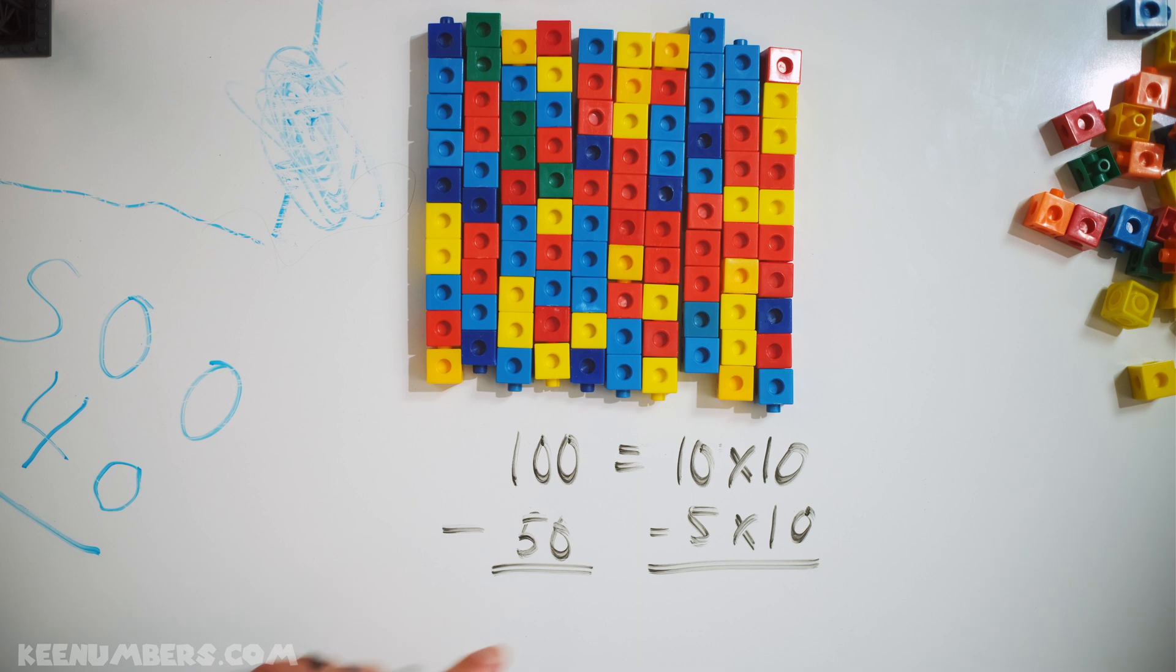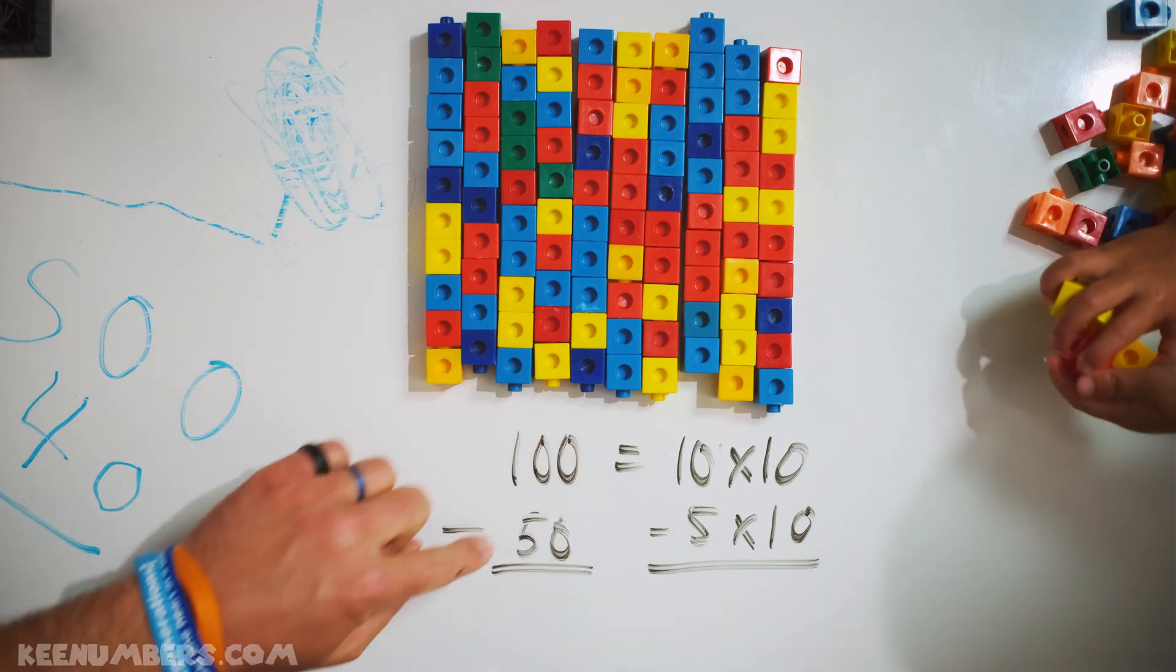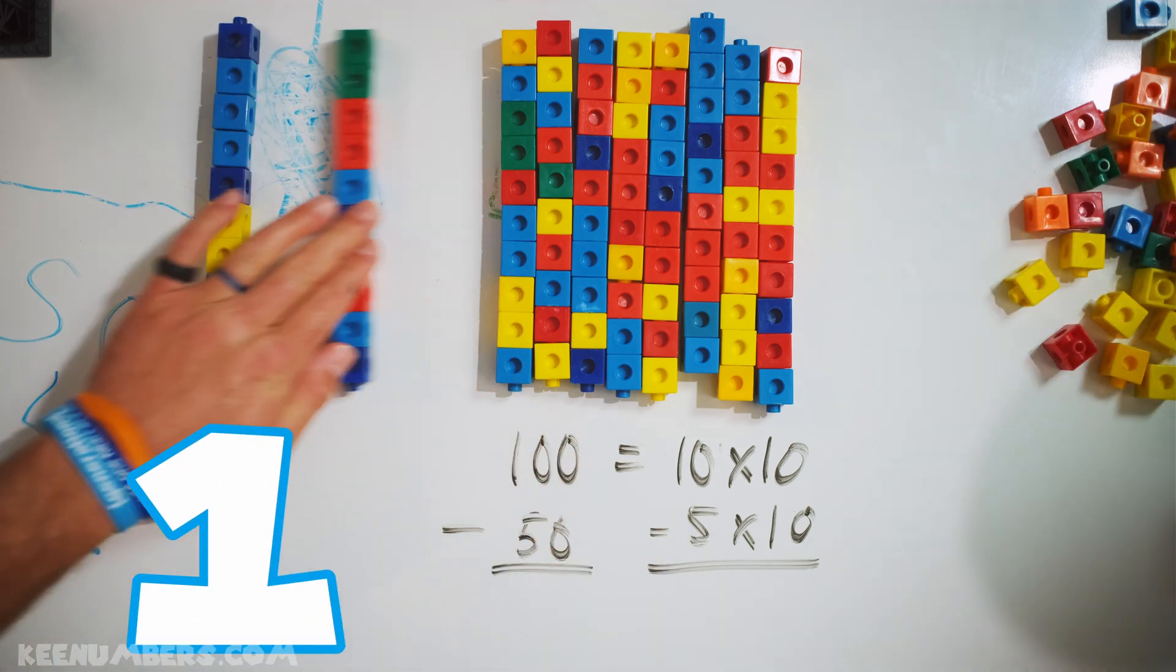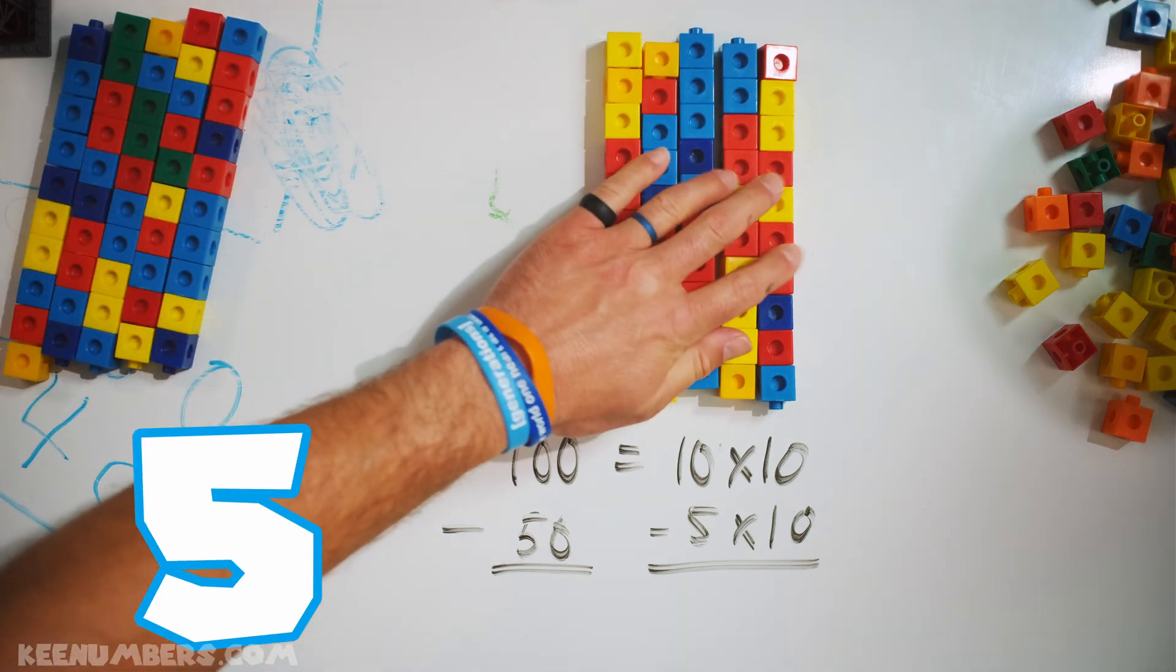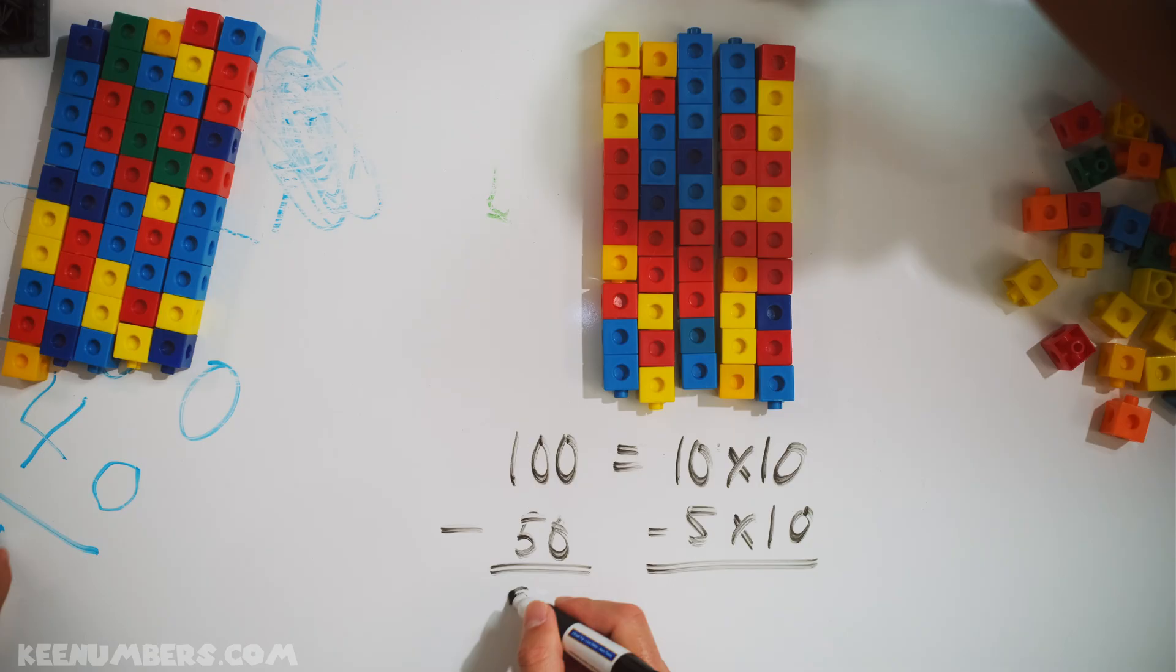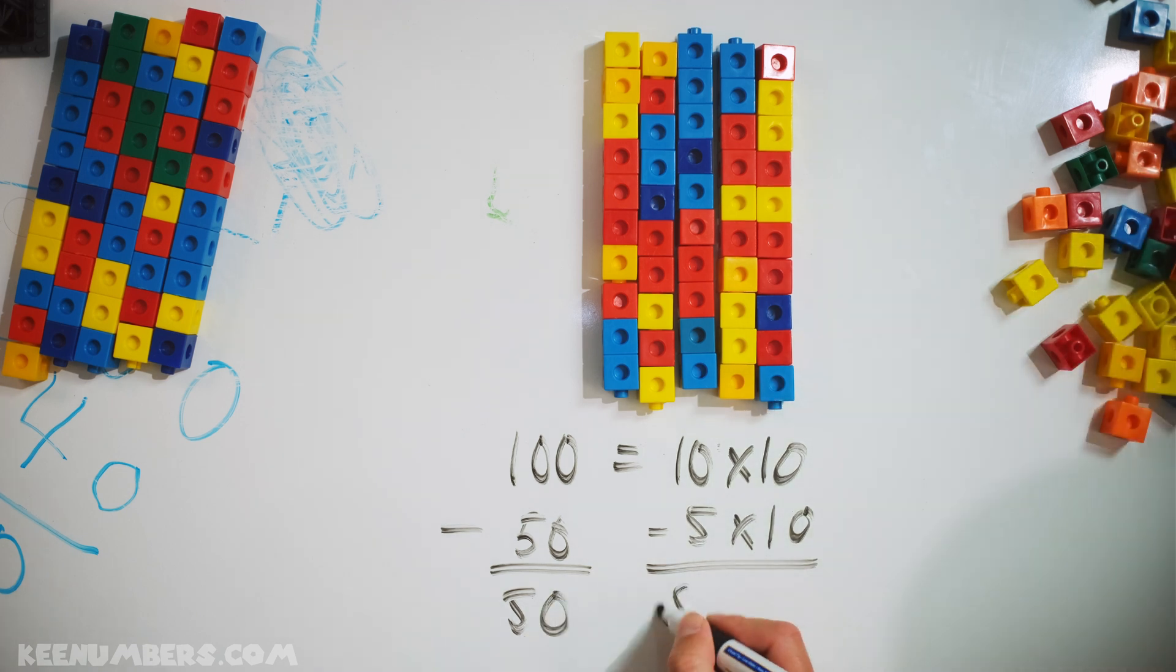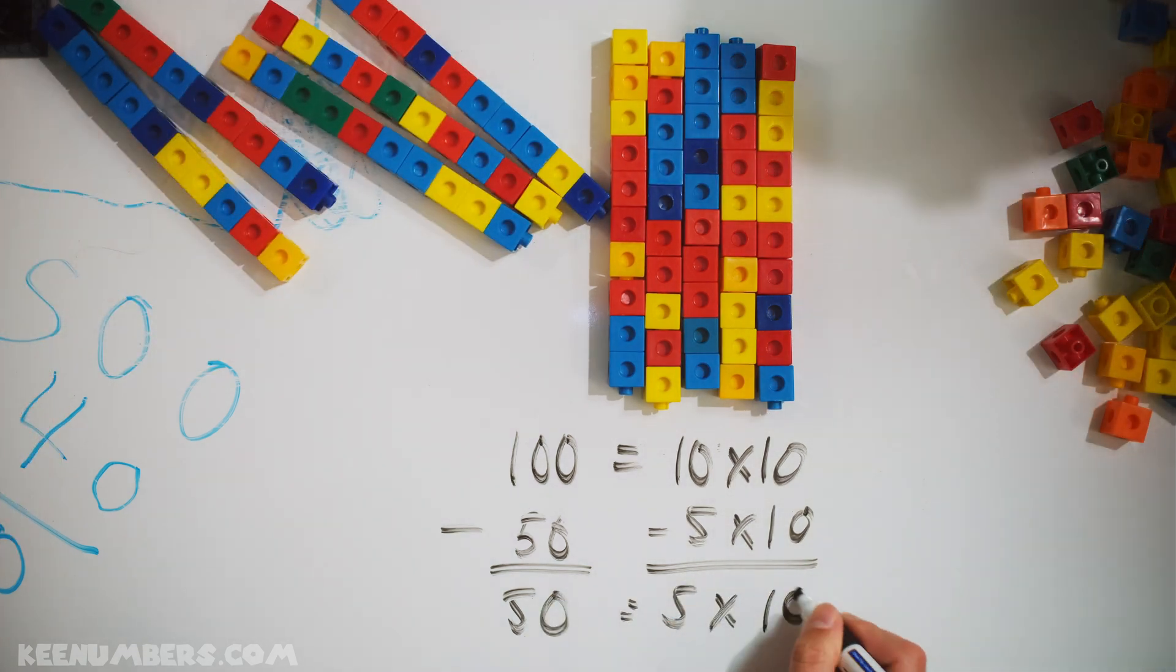100 minus 50. Okay, we got to take away 5 stacks of 10. That's another way to say 50. So 1, 2, 3, 4, 5. 100 minus 50 is 50. That's the answer. That's the answer. Or 5 stacks of 10.